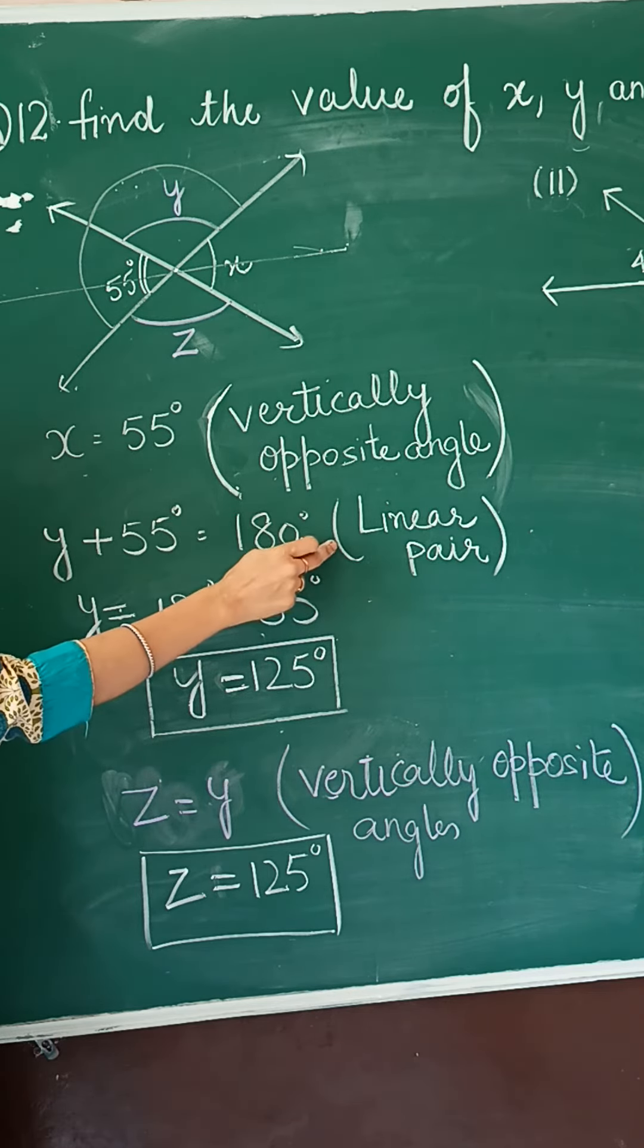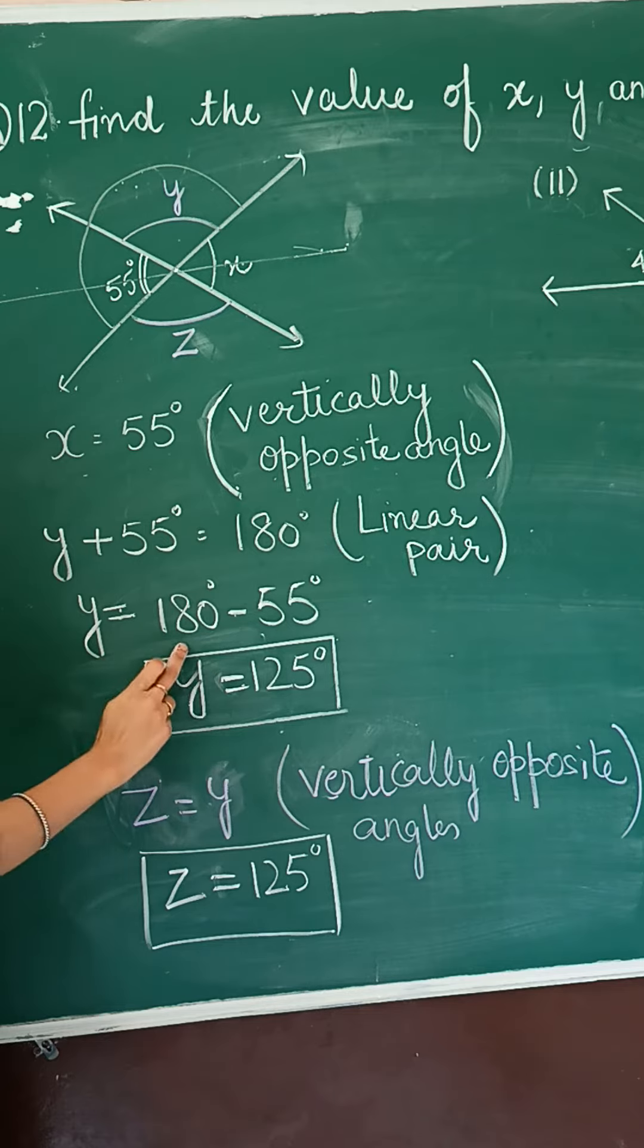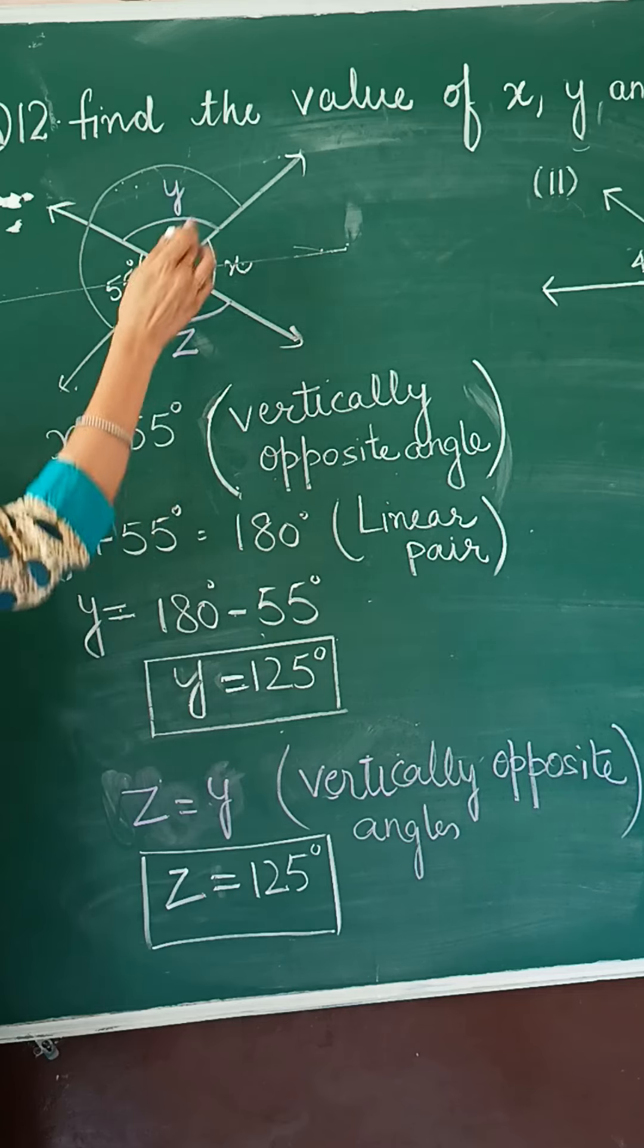Now, 55 will be transposed on the right side. We get y equal to 180 minus 55. So y is equal to 125 degree.